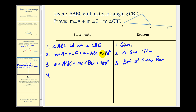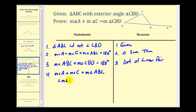Now because both of these equations are equal to 180 degrees, we can use the transitive property to state the measure of angle A plus the measure of angle C plus the measure of angle ABC would have to be equal to the measure of angle ABC plus the measure of angle CBD. Again, this is the transitive property.